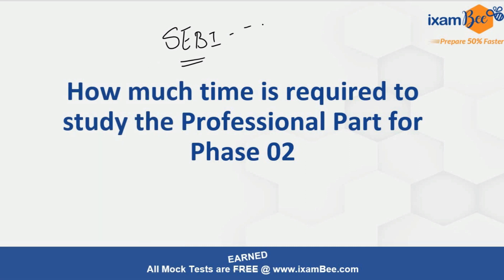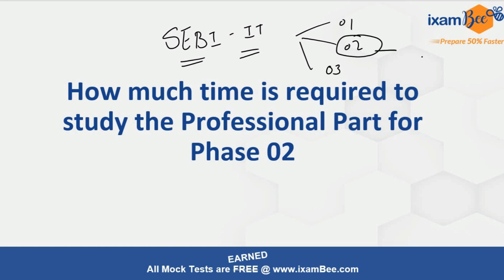In SEBI IT there are three phases of the examination: Phase 1, Phase 2, and Phase 3. In Phase 2 we are going to have the coding paper, which is the toughest and the trickiest part of the entire examination.